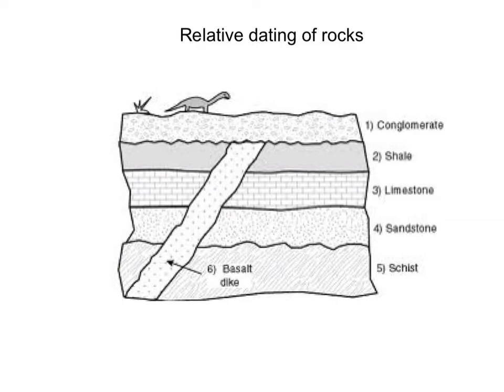In this diagram, the metamorphic rock schist would have been laid down first and is therefore the oldest rock in this sequence. Next would have come the sedimentary rock sandstone, and then limestone, another sedimentary rock, was laid down.